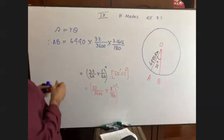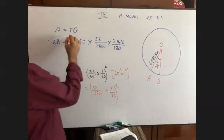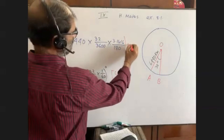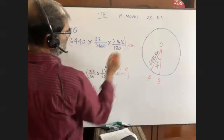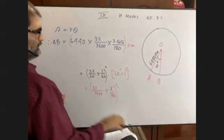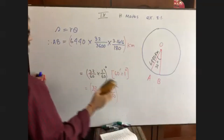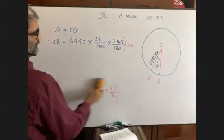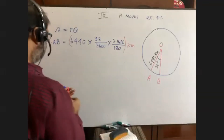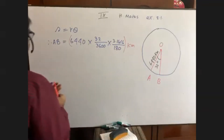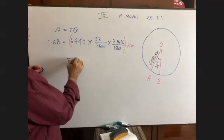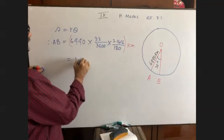Now we know S equals R theta. Therefore S for AB equals R — which is 6440 kilometers — times theta, which is 32 by 3600 into pi by 3.1416 by 180. This comes out to approximately 1 kilometer.